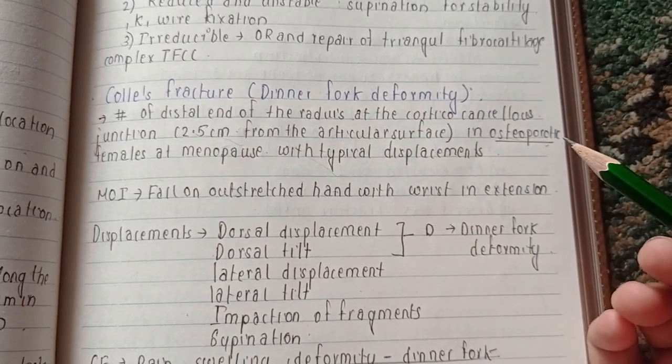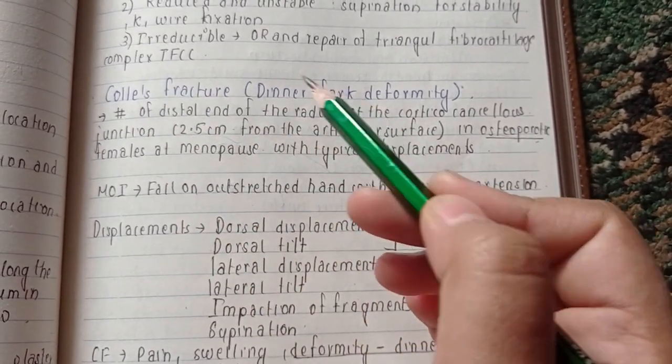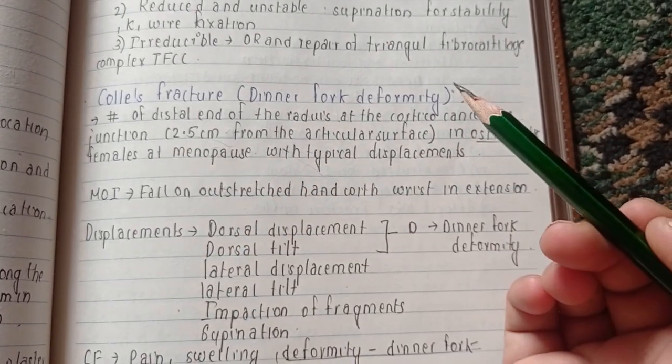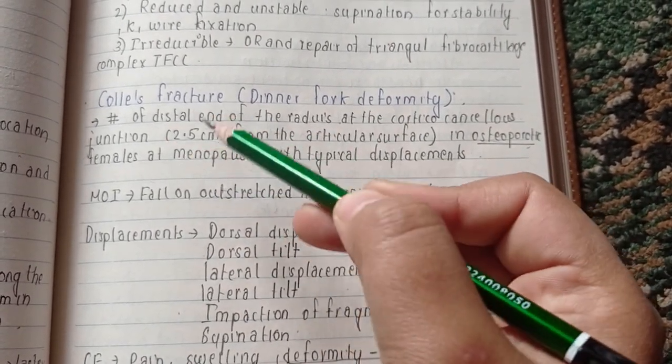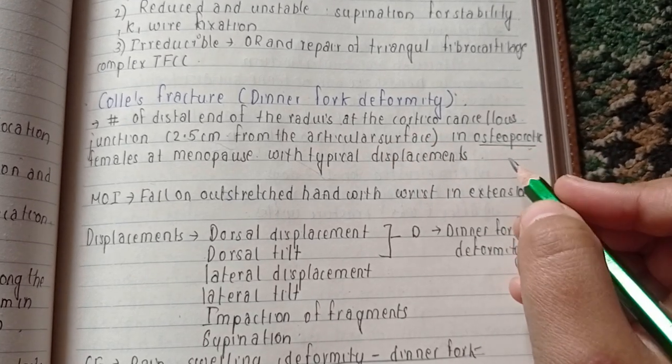We have to remember some points. First, it is the fracture of the distal end of the radius at the corticocancellous junction, which lies 2.5 centimeters from the articular surface.